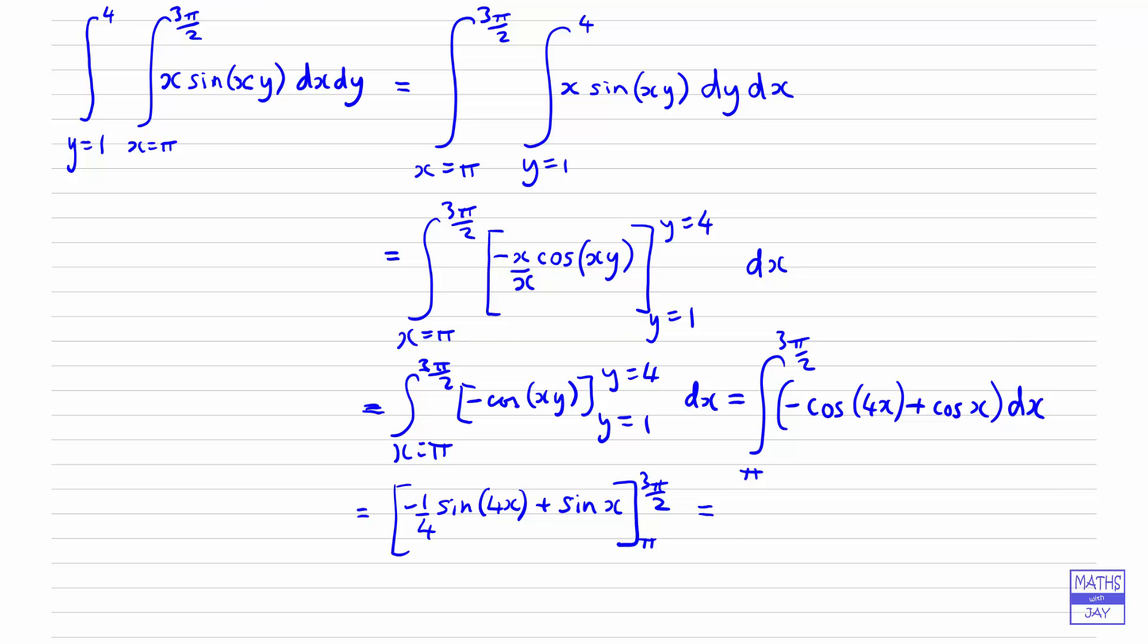So that will give us minus a quarter of sine(6pi) plus sine(3pi/2). And then we will want to subtract negative a quarter of sine(4pi) plus sine(pi). Now sine of 6pi, 4pi and pi is 0, so all we're left with is sine of 3pi by 2, so we get an answer of minus 1.